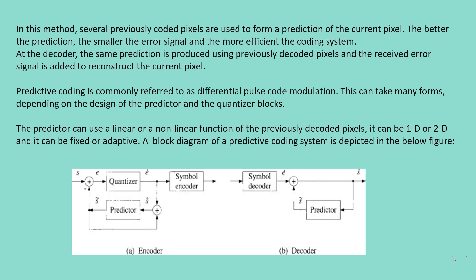In this method, several previously coded pixels are used to form a prediction of the current pixel. The better the prediction, the smaller the error signal and the more efficient the coding system. At the decoder, the same prediction is produced using previously decoded pixels, and the received error signal is added to reconstruct the current pixel. Predictive coding is commonly referred to as differential pulse code modulation, which is DPCM. This can take many forms depending on the design of the predictor and quantizer blocks. The predictor can use a linear or non-linear function of the previously decoded pixels. It can be either 1D or 2D, or it can be fixed and adaptive. A block diagram of a predictive coding system is depicted in these figures.